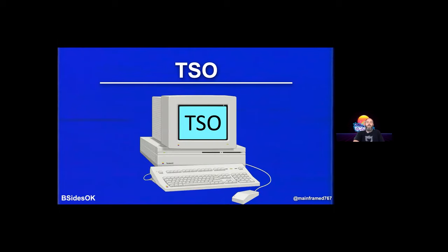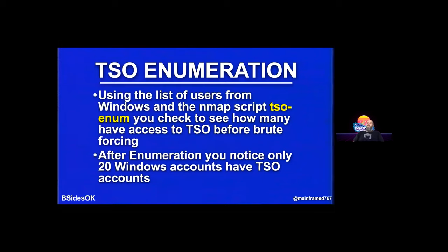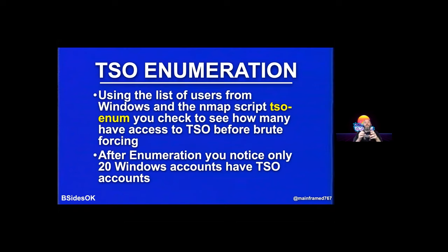We're going to be looking at TSO since CICS is blocked. Using the list of users from the Windows domain, we run an nmap script called TSO-enum. Unless you've turned on the TSO password pre-prompt setting, you can enumerate user IDs in TSO: type the user ID, hit enter, and it'll say either 'enter your password' or 'sorry, that user doesn't have TSO access.' After enumerating thousands of Windows domain accounts, only 20 Windows accounts have TSO access — and they're using the same user ID and password as in the domain.